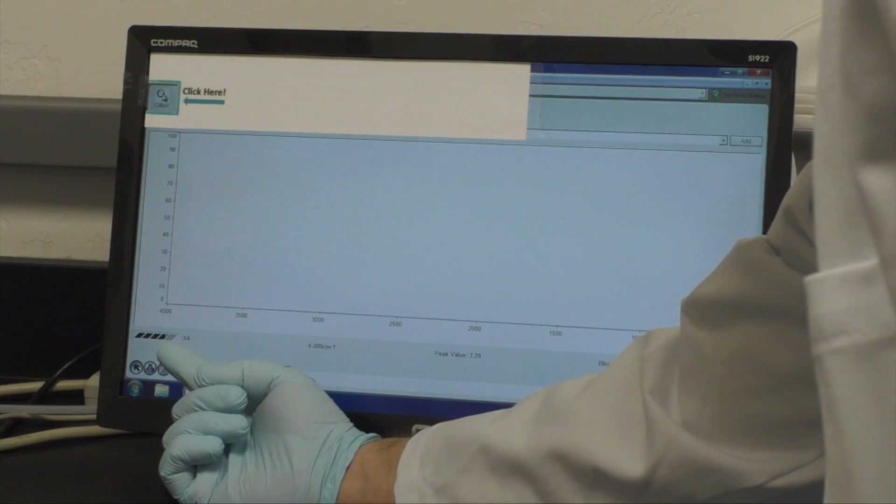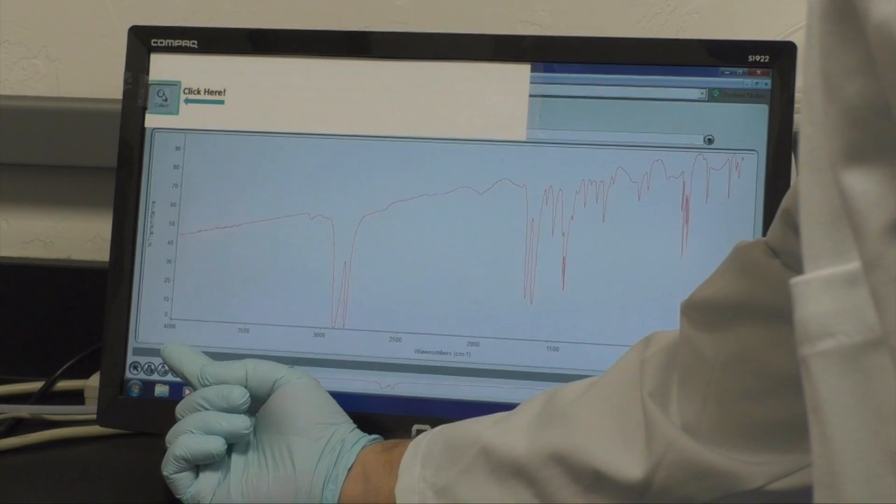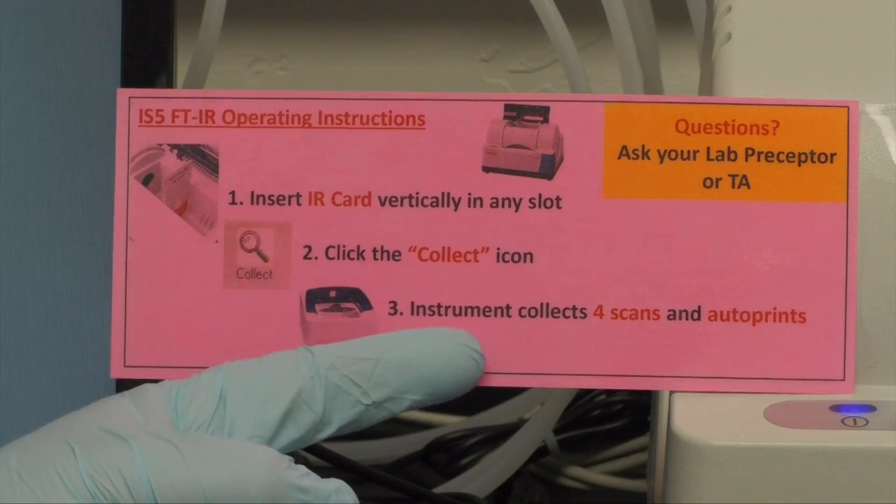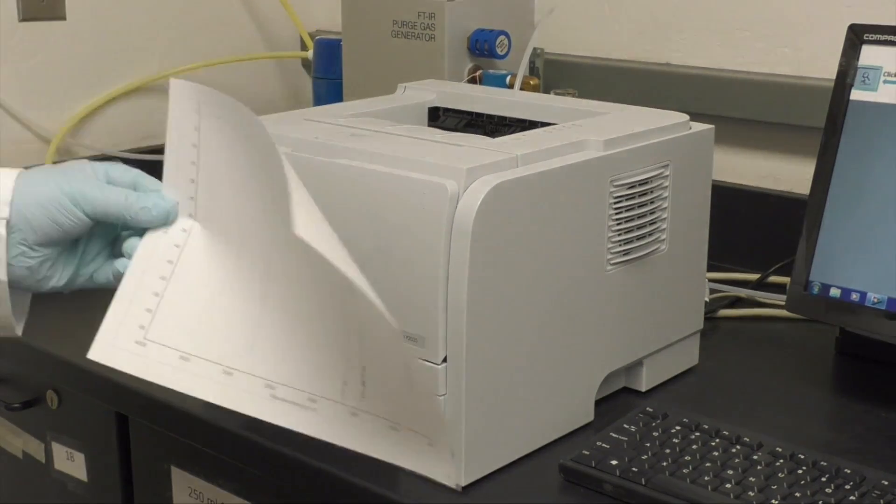If you need a second spectrum, wait for the first one to print, then click the collect icon again. The third step is to collect your spectrum from the printer.